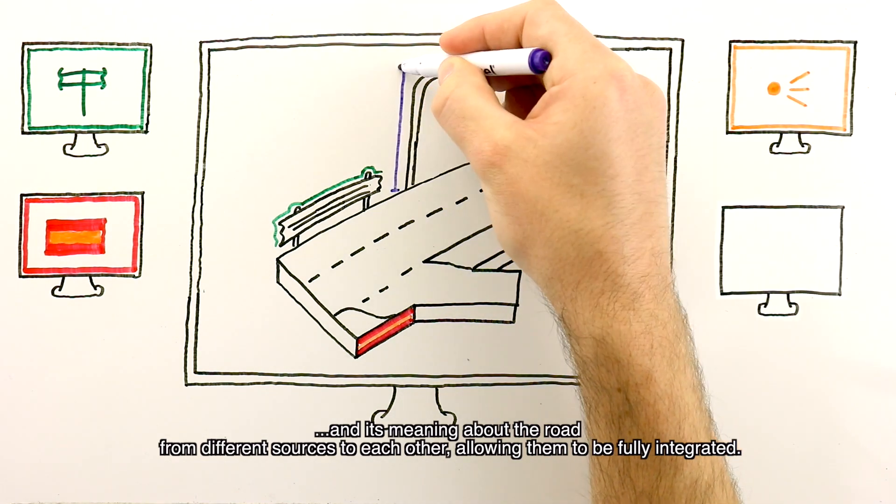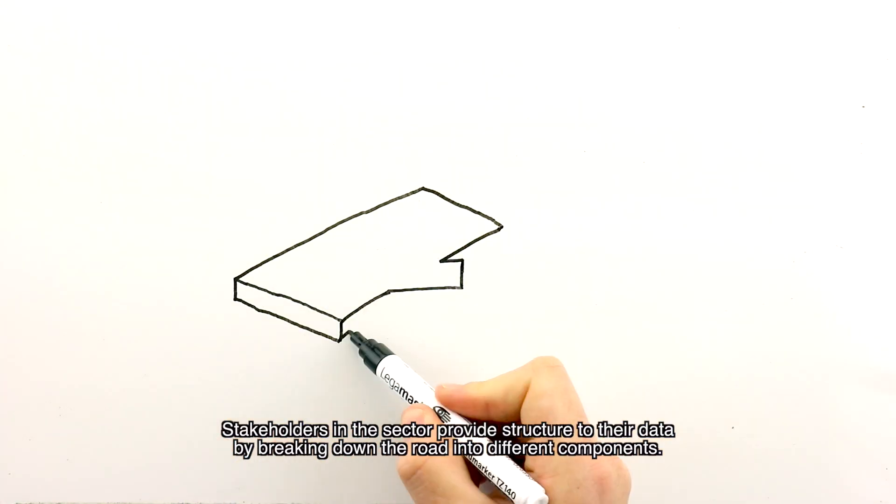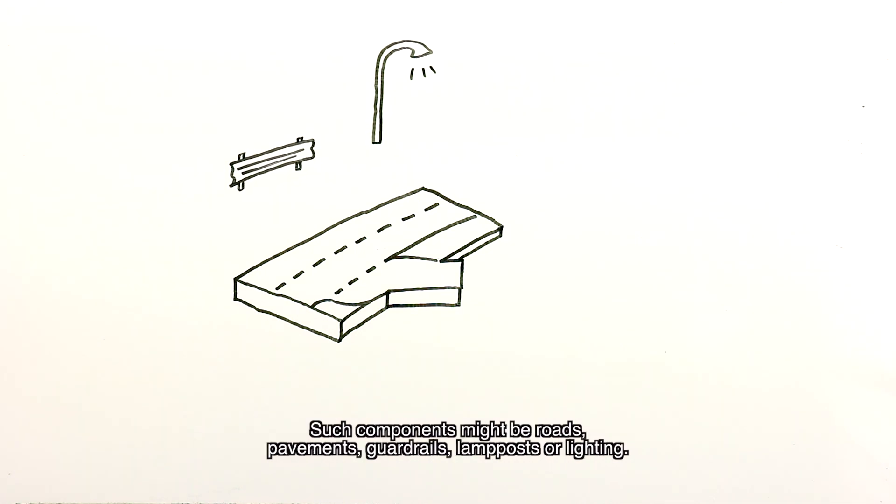How to create a digital twin of the road. Stakeholders in the sector provide structure to their data by breaking down the road into different components. Such components might be roads, pavements, guardrails, lampposts or lighting.